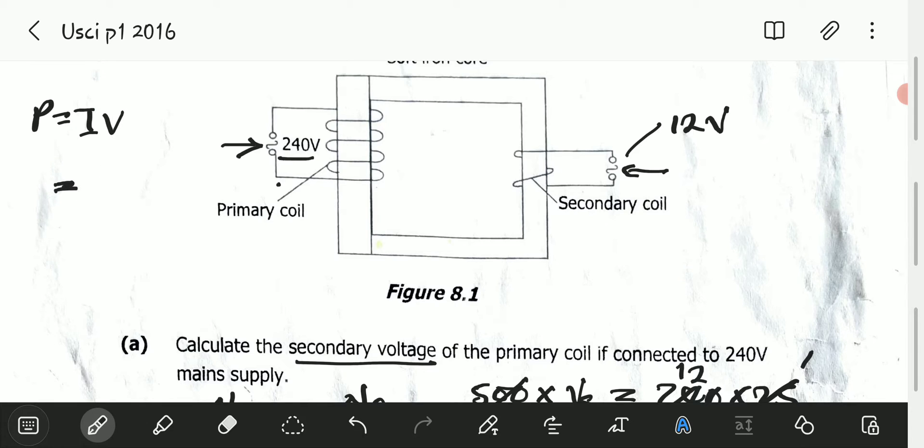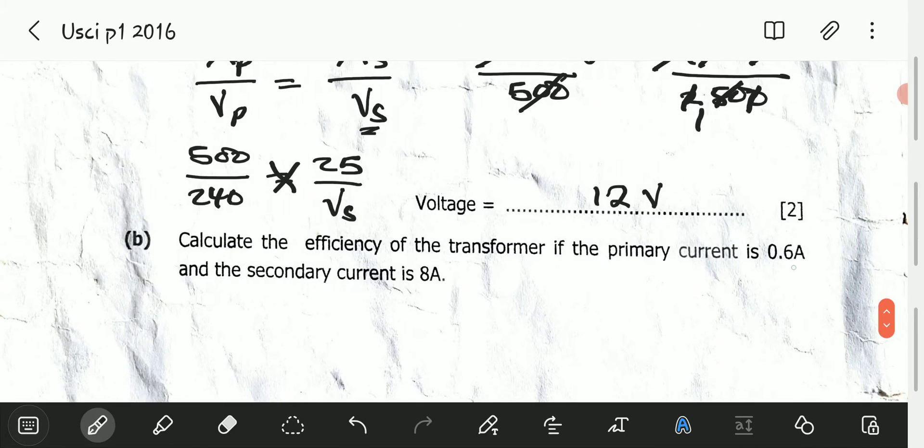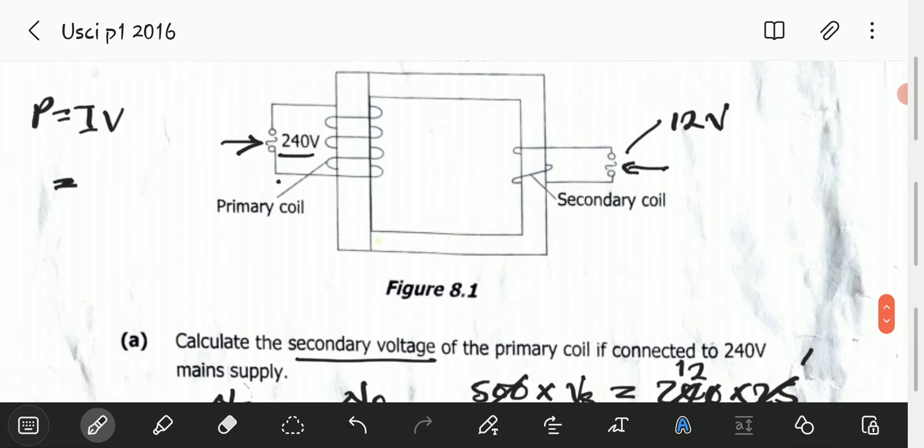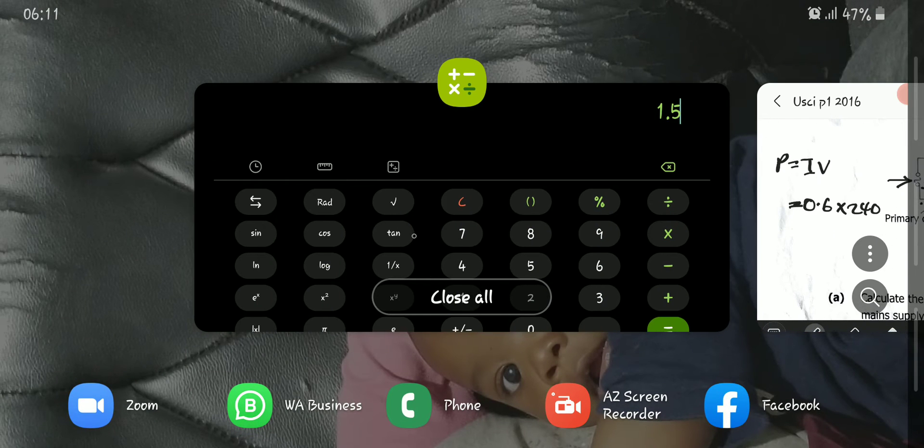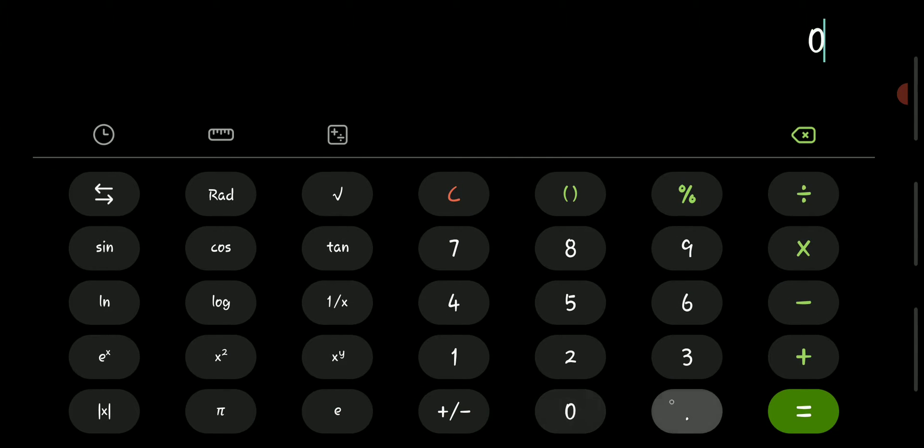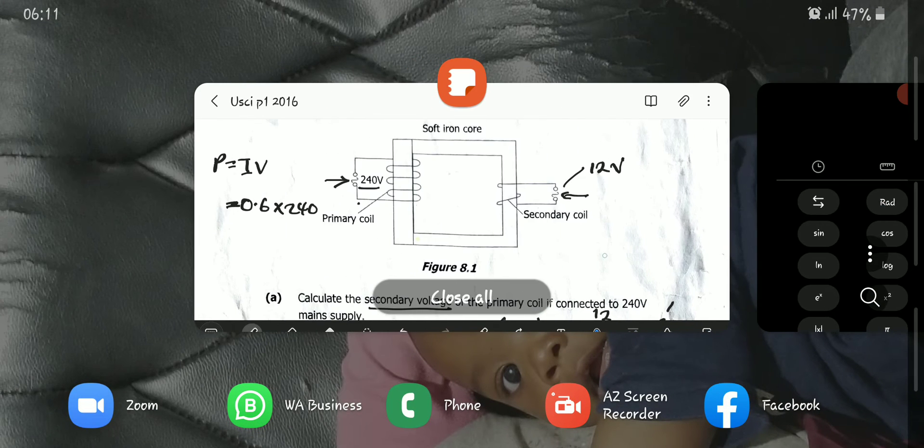We know that power equals IV, which is current times voltage. In the primary, we have a current of 0.6, so 0.6 multiplied by 240, which is 144 watts.